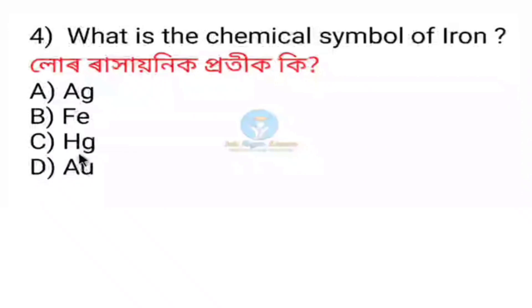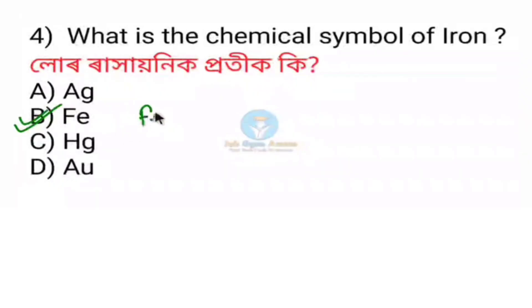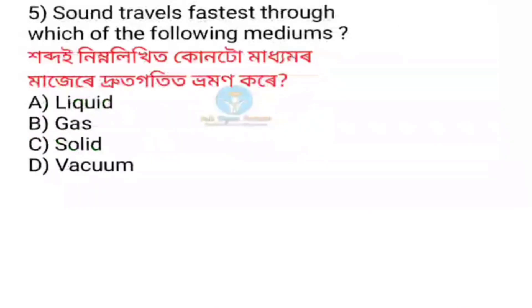What is the chemical symbol of iron? The symbol is Fe, and the Latin name is Ferrum.